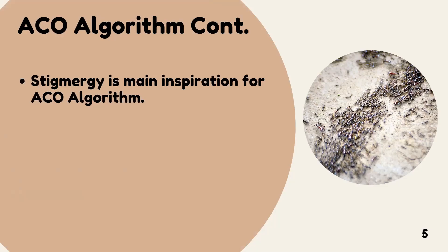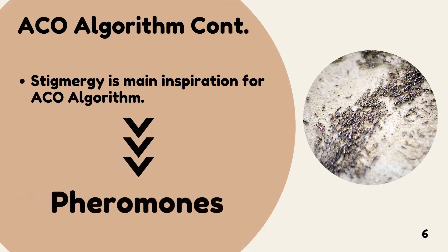The main inspiration behind the ACO algorithm is stigmergy. Stigmergy is basically the behavior of ants when searching for food, and it is driven by a special component called pheromones. Ants use pheromones to communicate with each other and to identify the shortest path to the food source.